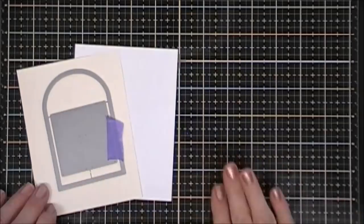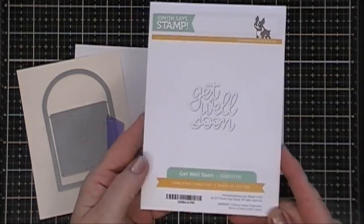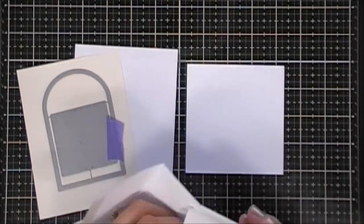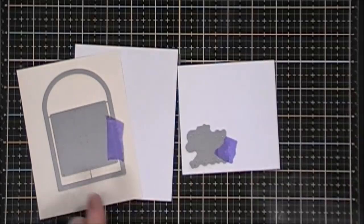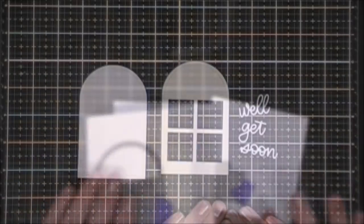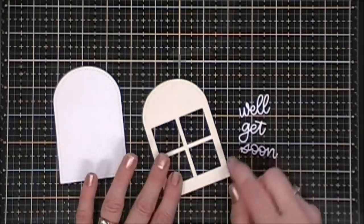Now for my sentiment, since it doesn't come with a sentiment in the stamp set, I grabbed one from my stash. This is from Simon Says Stamp and it's a Get Well Soon die. It's all connected, but when you die cut them out they're individual. Using white cardstock I'll die cut out my sentiment.